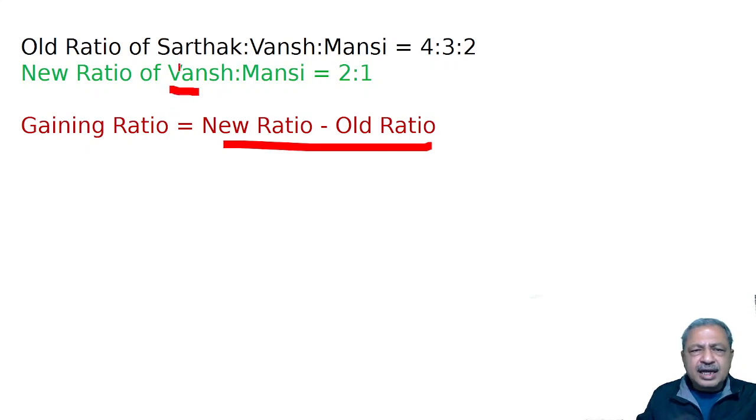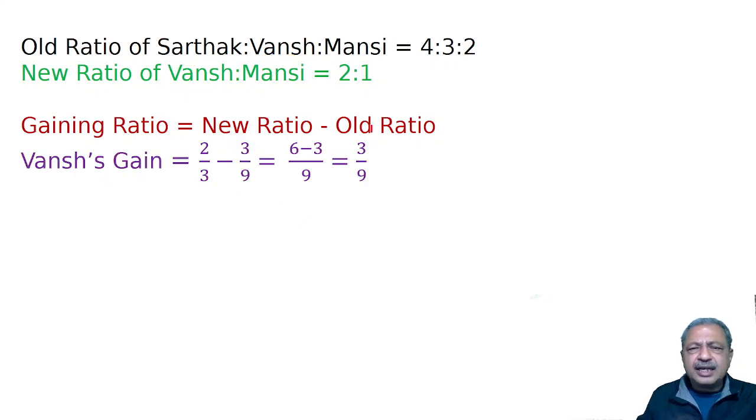Bans' gaining share is 2/3 minus 3/9. So, this is 3/9.